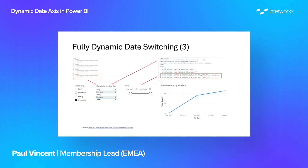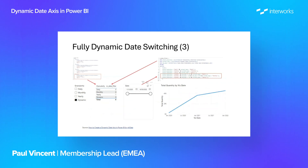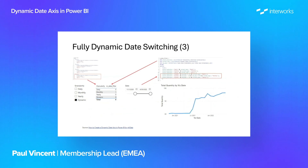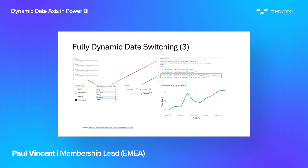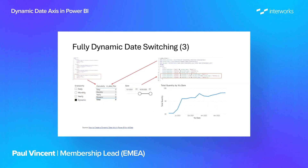Pulling this all together — the modified dates table gives us the additional option for dynamic switching. The user can select daily, monthly, or yearly, but they can also go to dynamic mode. The date filter is checked by the switch calculation, and depending on which condition is met, the date filter sets a one in our granularity filter to control the resolution of the visualization.